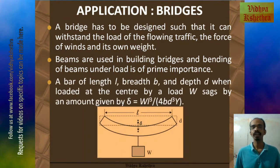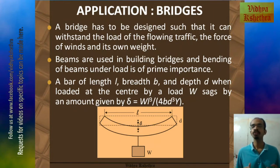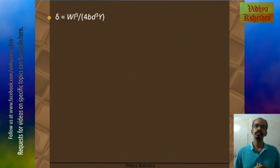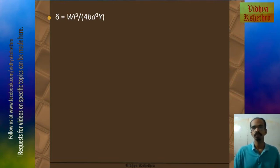A bar of length L, breadth B, and depth D, when loaded at the center by a load W, sags by an amount given by: delta equals W times L cubed divided by 4 times B times D cubed times Y, where Y is the Young's modulus or the modulus of elasticity. Now we can consider this equation based on which certain things can be arrived at.